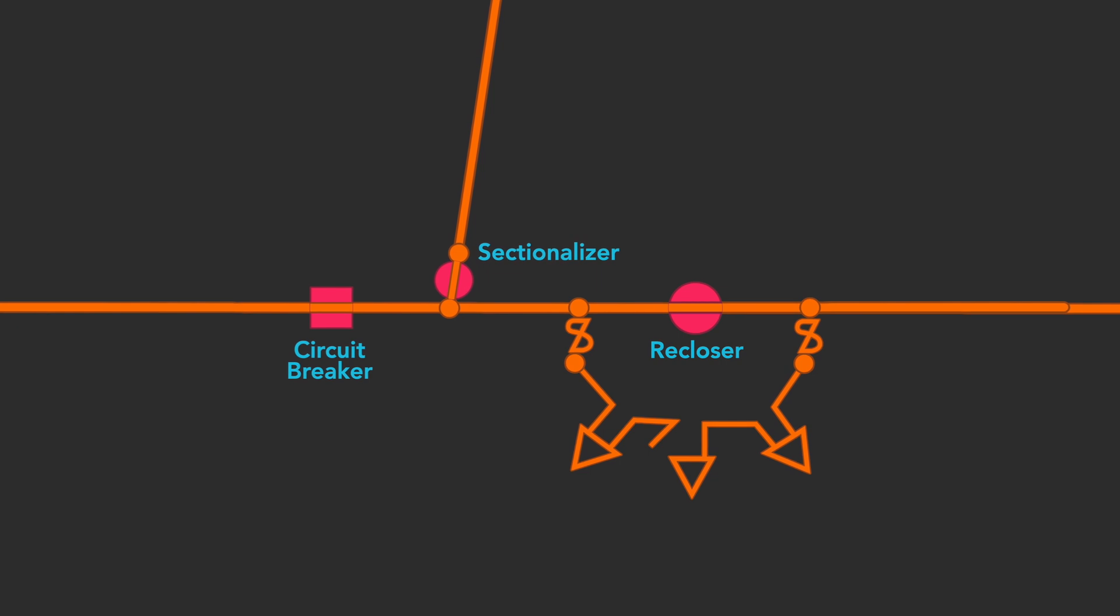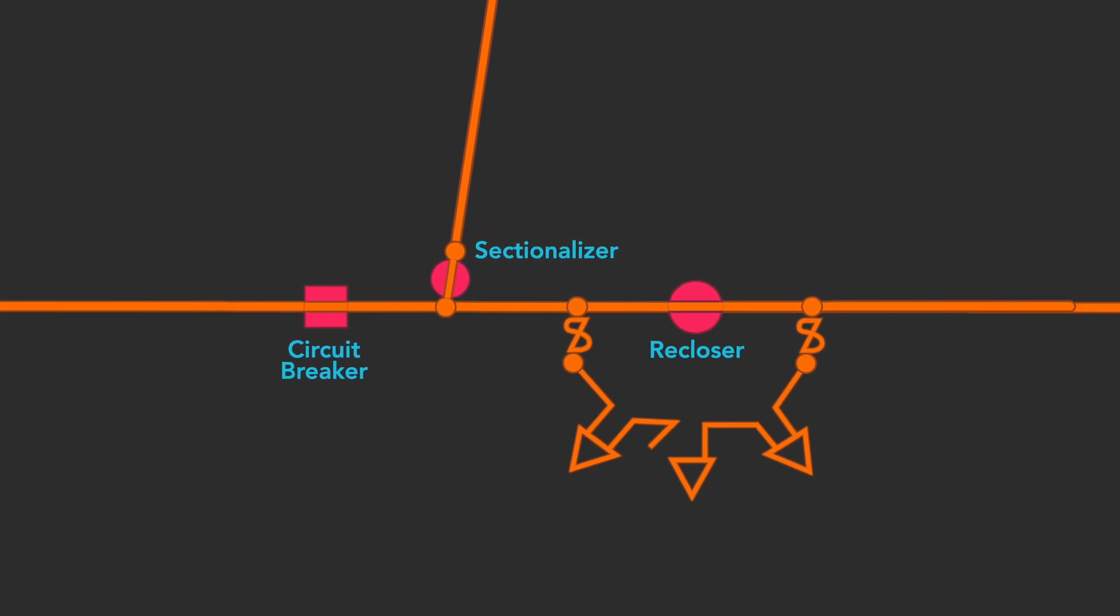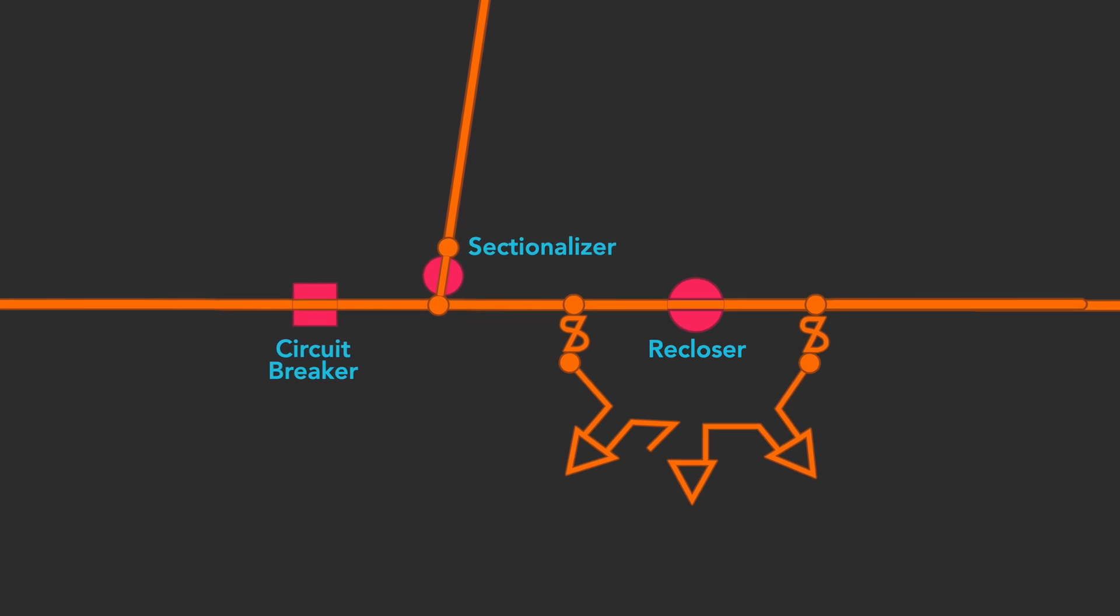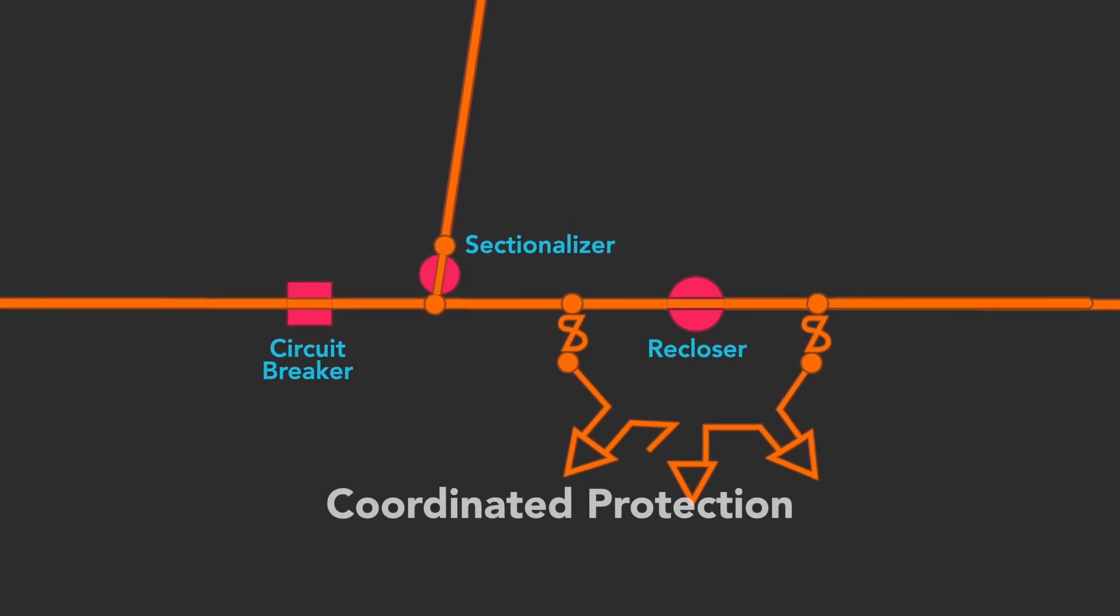A system that can respond to both temporary and sustained faults and keep the maximum number of customers energized while preventing or limiting damage is said to be a system of coordinated protection.